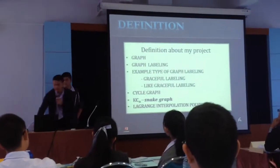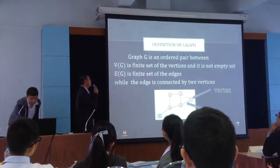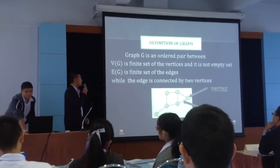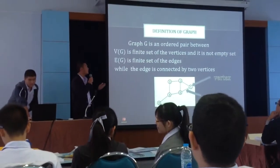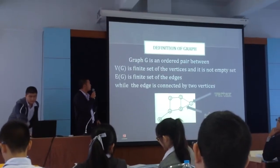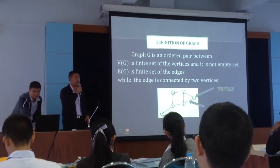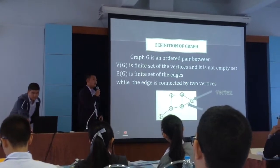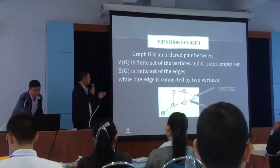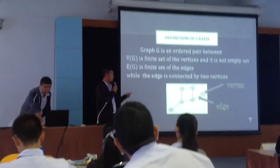Our definition. Definition of graph: if we have a graph G with an ordered pair, V(G) is a finite set of vertices, and E(G) is a finite set of edges, while it is connected by two vertices.